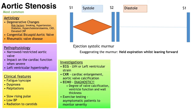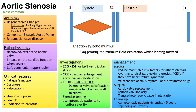Management of aortic stenosis depends on presence or absence of symptoms, cardiac function, severity of stenosis, and the patient's suitability for surgery. First-line treatment for symptomatic patients is aortic valve replacement. While awaiting surgery, or if unsuitable, patients may be given digoxin, diuretics, ACE inhibitors and a maintenance drug for sinus rhythm. Asymptomatic patients are only offered valve replacement if they have reduced left ventricular ejection fraction or are undergoing other cardiac surgery. Those with mild or moderate asymptomatic stenosis have follow-up every six months to five years depending on severity.